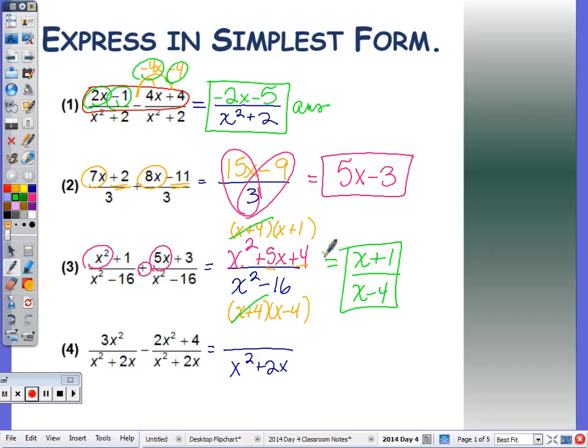The last one, subtraction, so as I mentioned, we want to make sure we distribute that negative all the way through, so minus 2x squared minus 4. Combining the like terms, 3x squared minus 2x squared is x squared, and I bring over the negative 4 as there's nothing to combine.